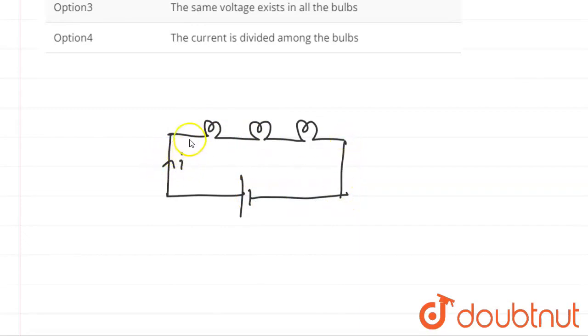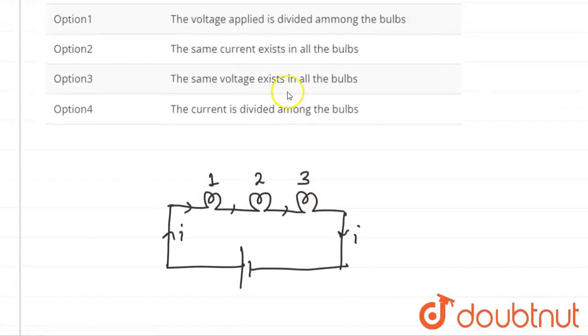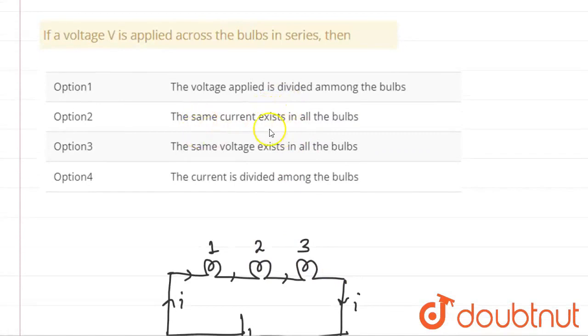Now, the current here will be the same throughout. Option 2 states the same current exists in all the bulbs, which is correct. Option 4 says the current is divided among the bulbs, which is wrong. This is why option 2 is correct, not option 4.